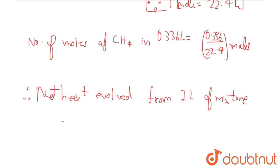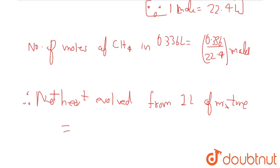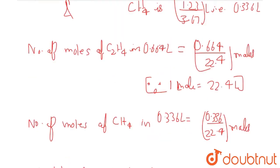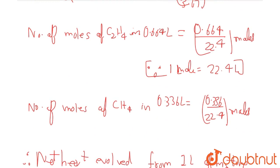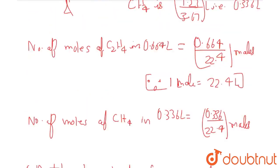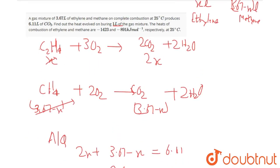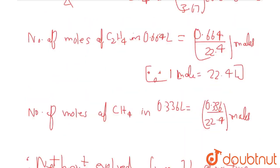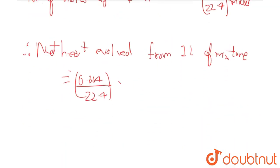This is 0.664 divided by 22.4 times minus 1,423 kJ for ethylene, plus